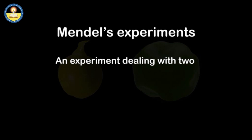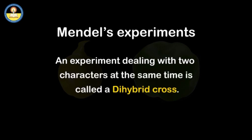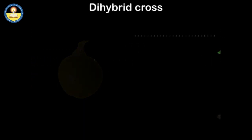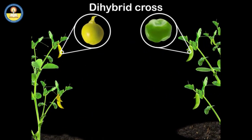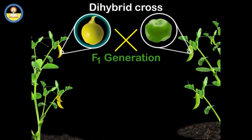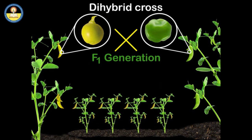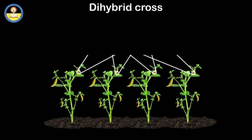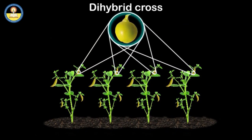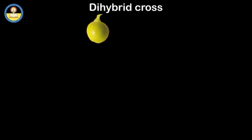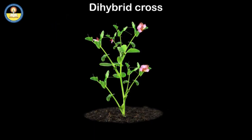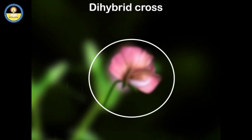Mendel also studied the inheritance of two characters simultaneously. A breeding experiment dealing with two characters at the same time is called a dihybrid cross. Mendel considered shape as well as color of seeds simultaneously. He crossed plants from seeds of round shape and yellow color with those having wrinkled seeds and green color. It was observed that in F1 generation, all seeds had the features of only one parental type — round shape and yellow color. He then raised plants from F1 generation seeds and allowed the flowers to self-pollinate to produce seeds of F2 generation.